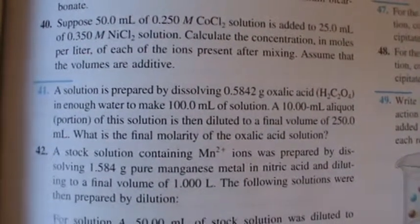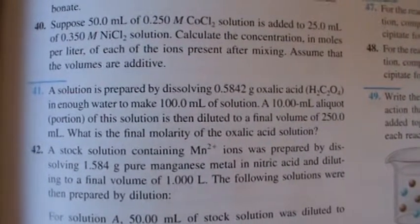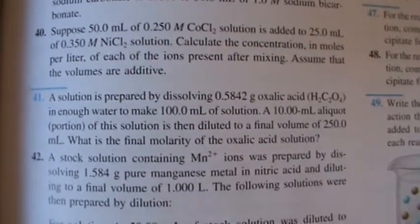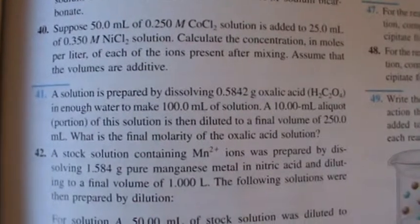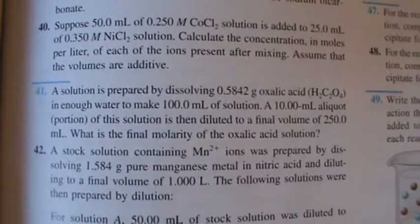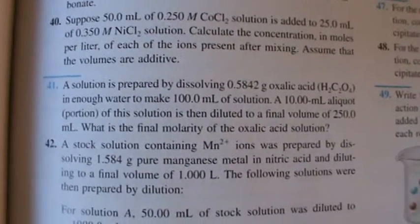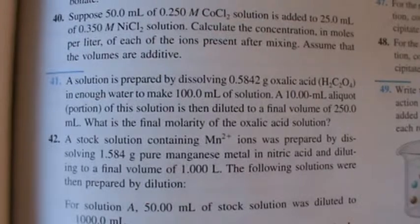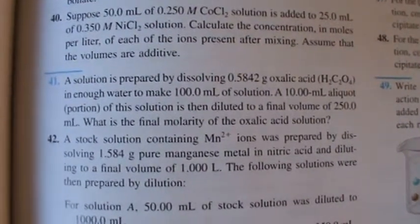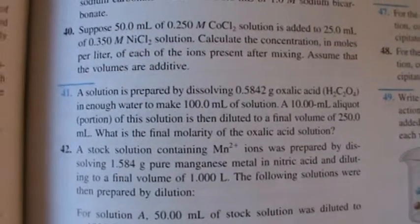A solution is prepared by dissolving 0.5842 grams of oxalic acid, that's the oxalate ion C2O42- with two protons on it, in enough water to make 100 milliliters of solution. A 10 milliliter aliquot portion of this solution is then diluted to a final volume of 250 milliliters. What is the final molarity of the oxalic acid solution?